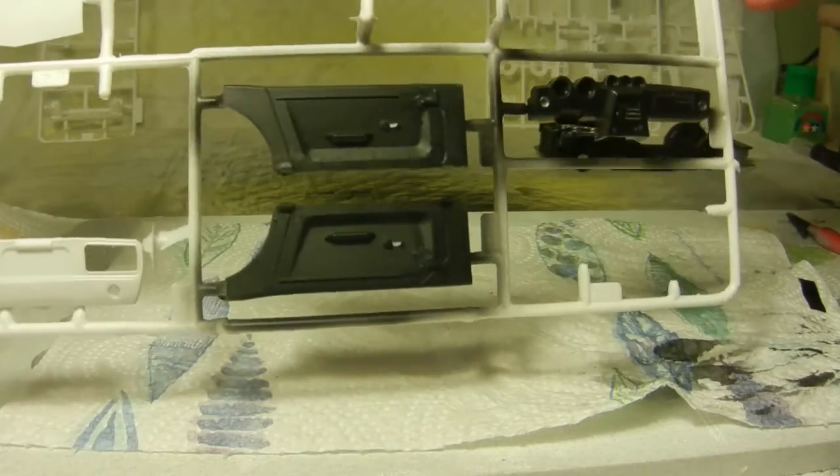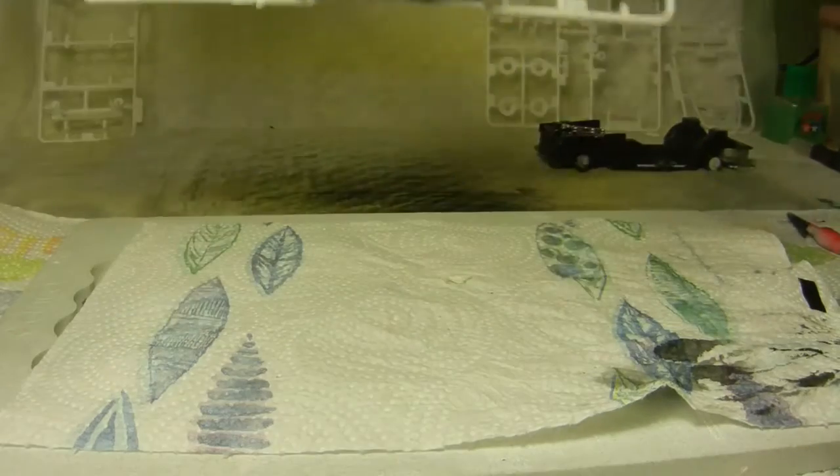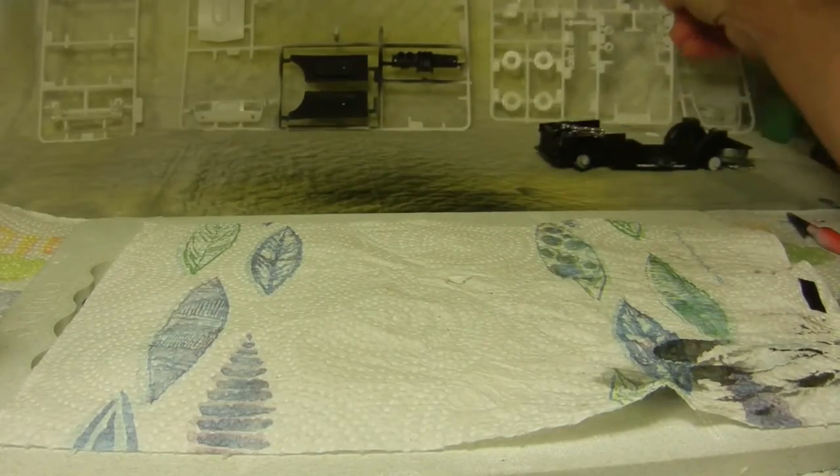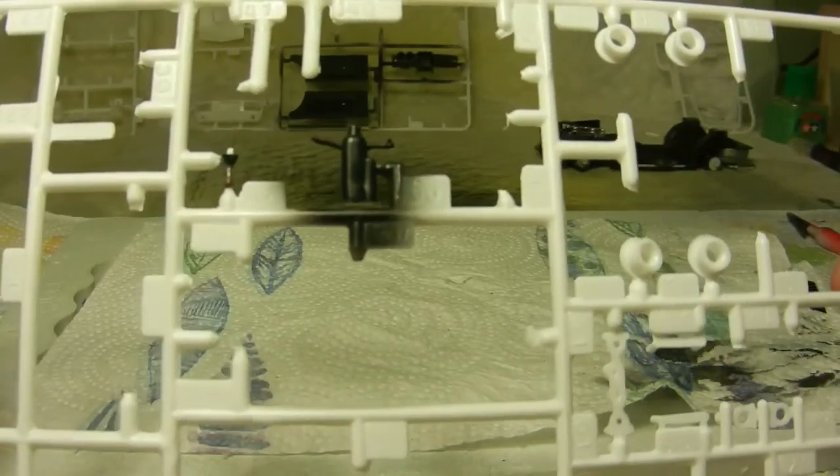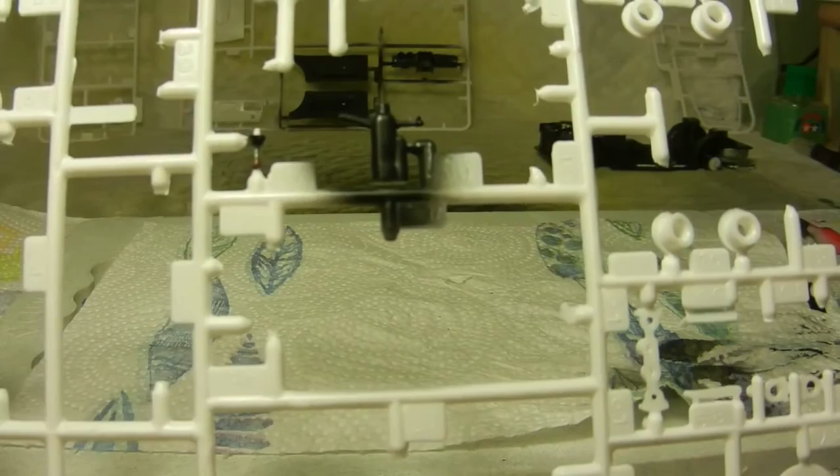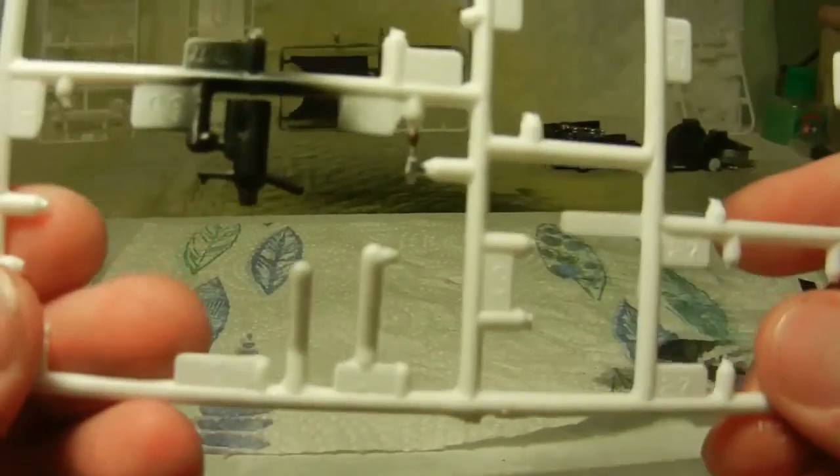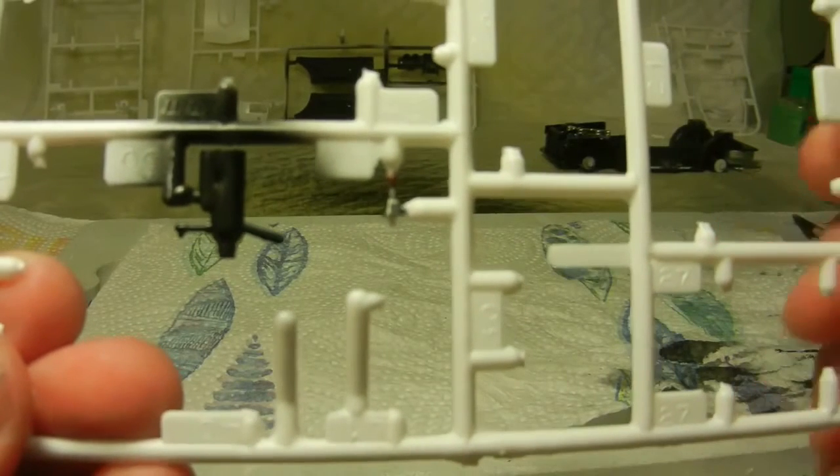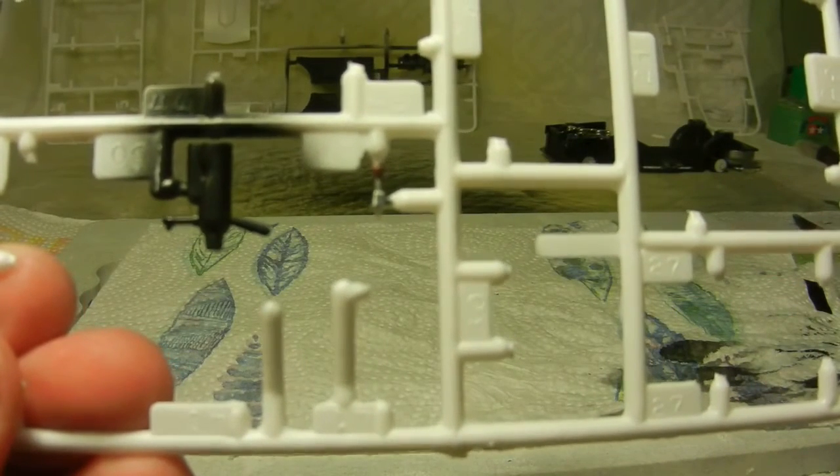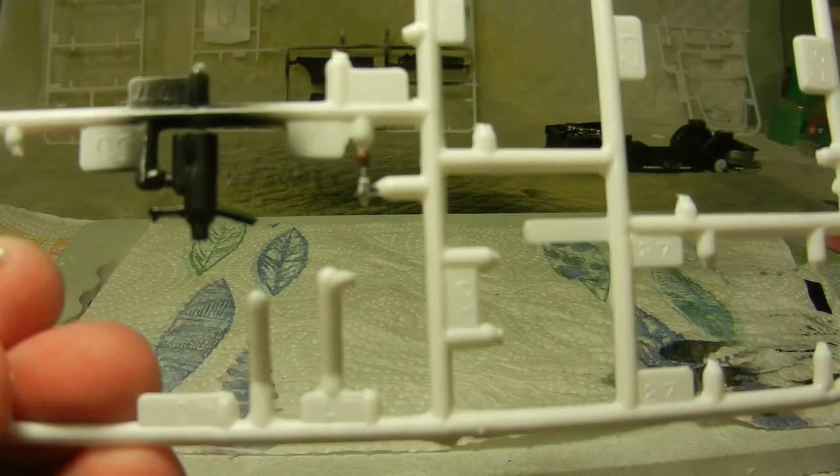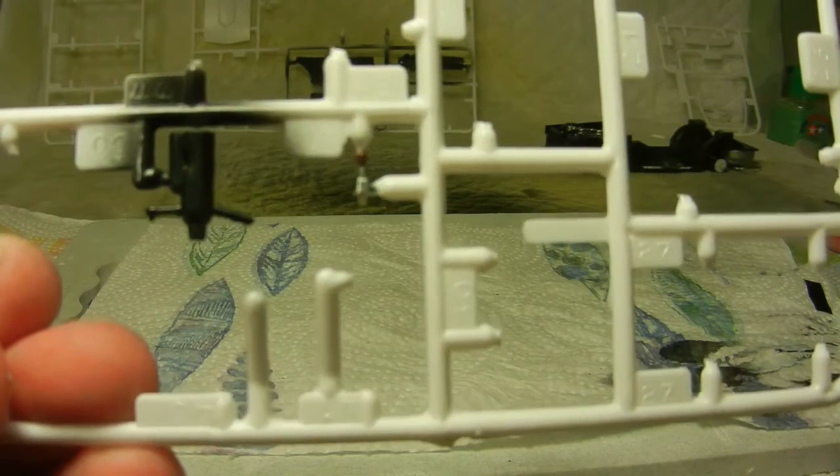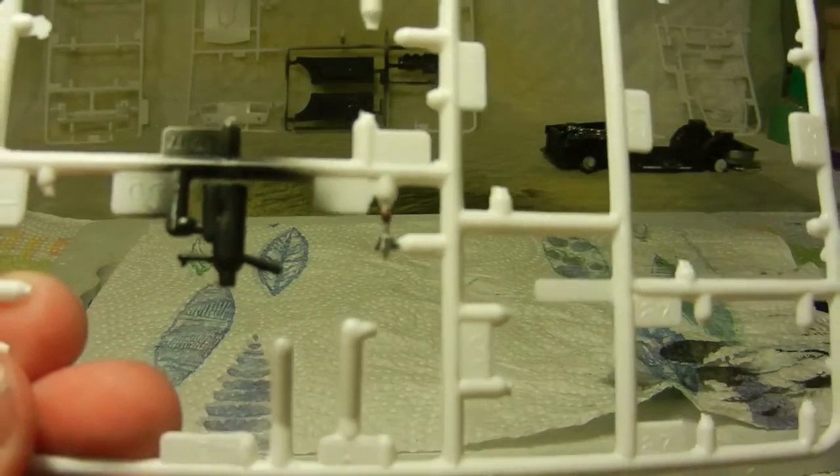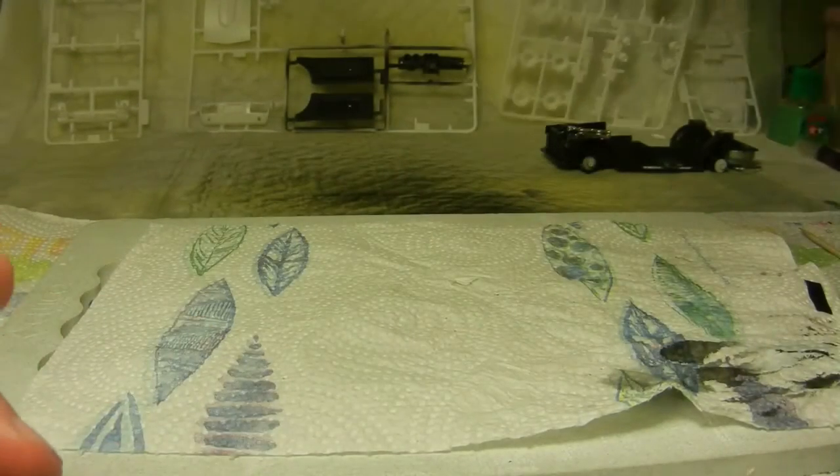I also went ahead and hand brushed in the steering column so that is done and ready to go. And of course then we have the gear shift. I went ahead and painted the knob of the gear shift in brown to kind of give it like a wood handle look to it, so that is now done.